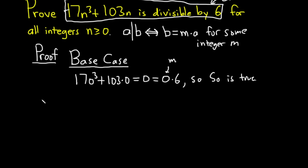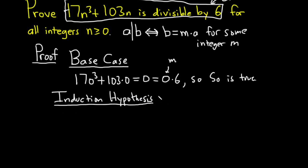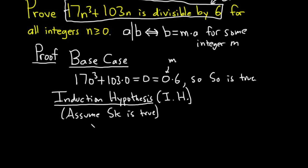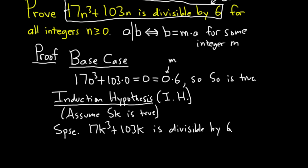Now we go to the induction hypothesis — I'll abbreviate it IH. We basically assume that our statement is true for some integer k greater than or equal to 0. So suppose that 17k cubed plus 103k is divisible by 6 for some integer k greater than or equal to 0.